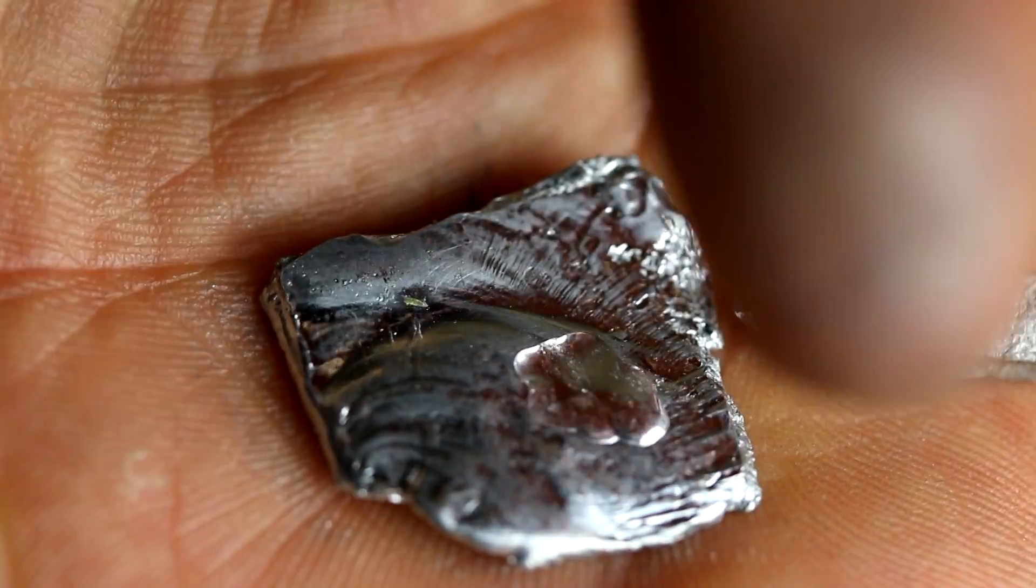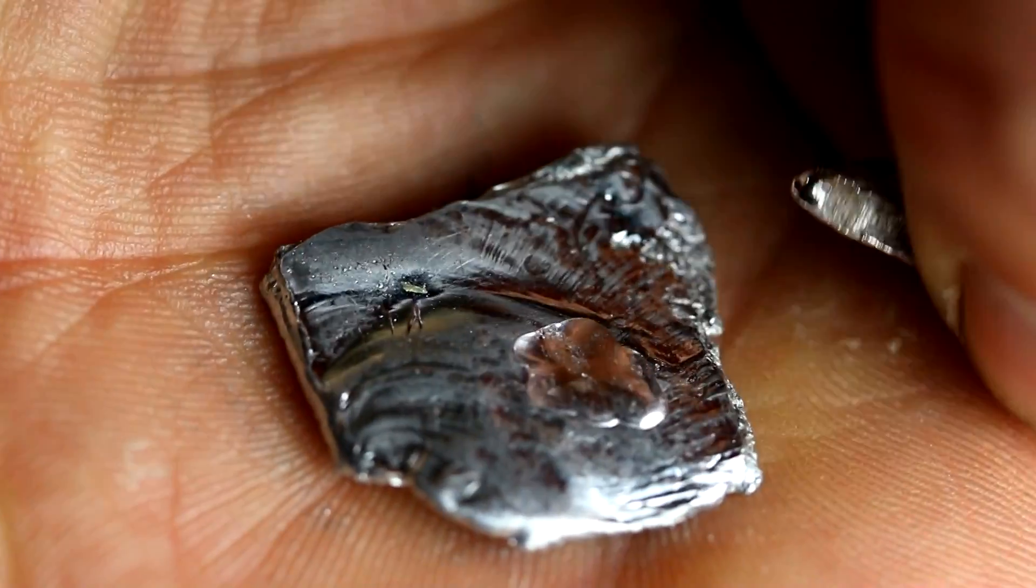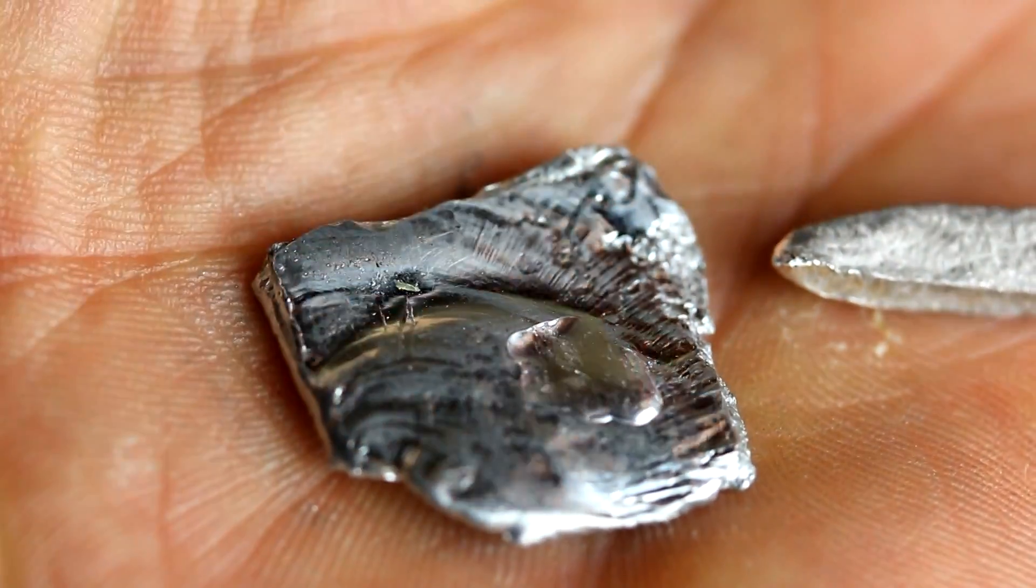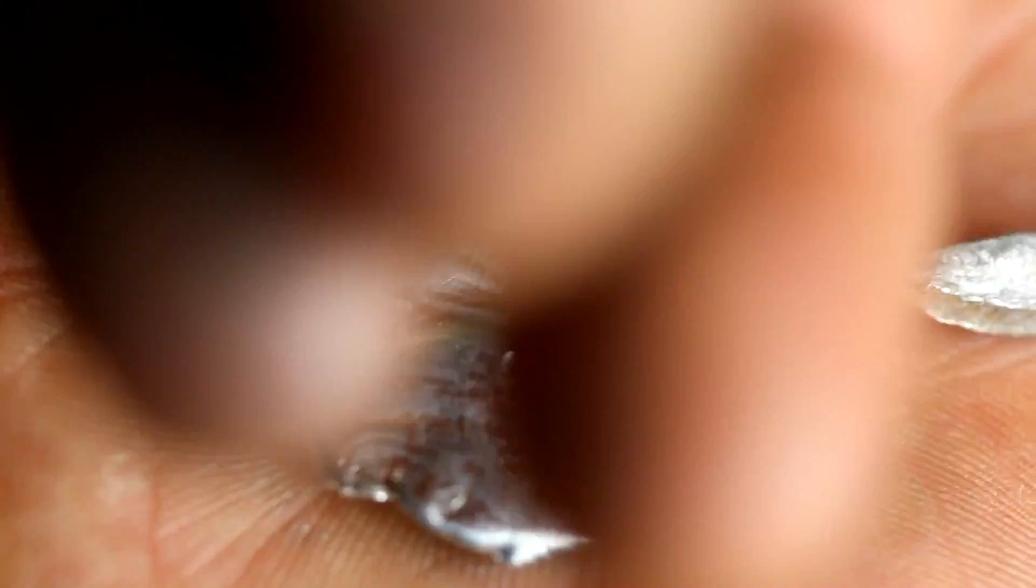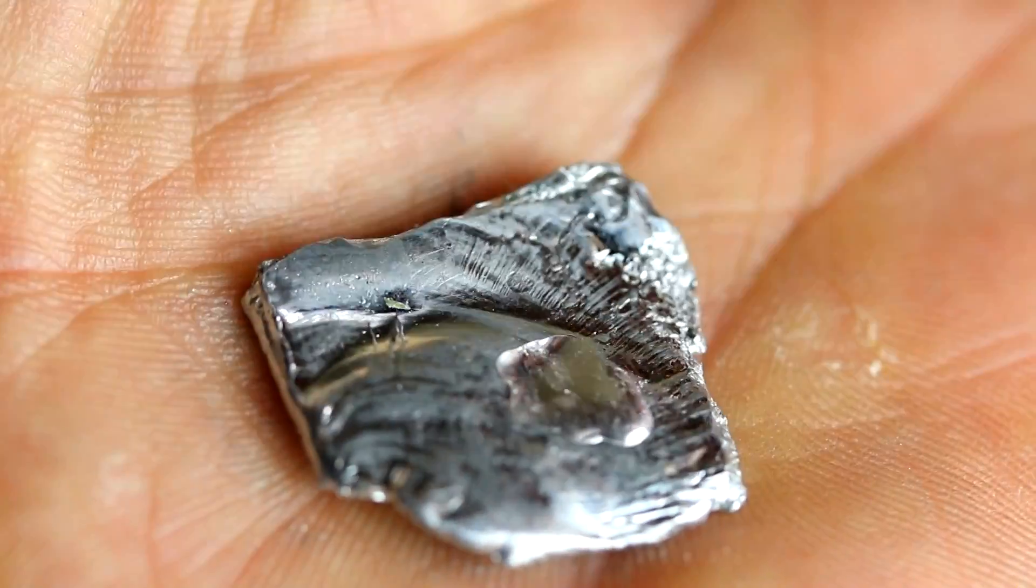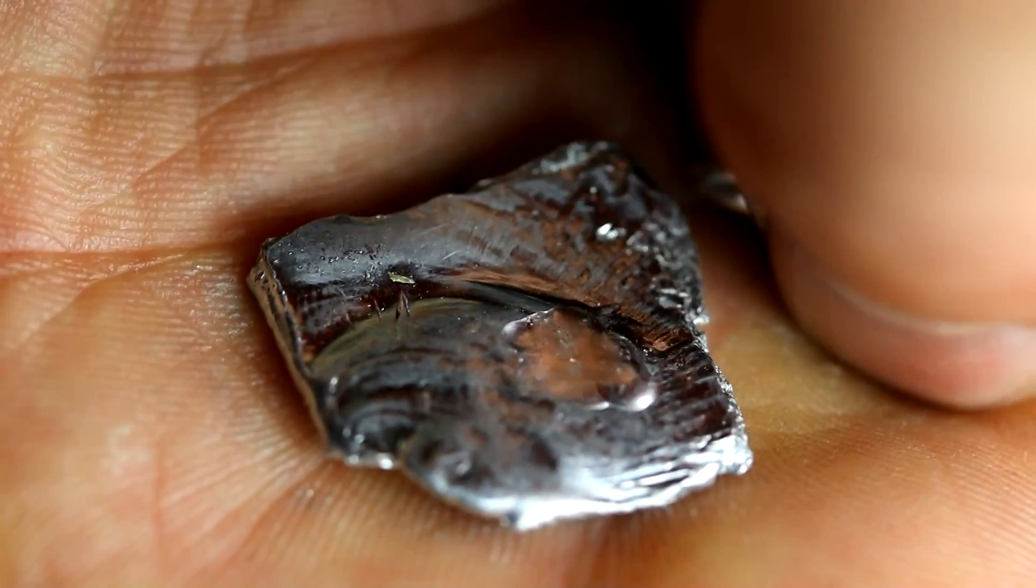Basically the second metal gets in the way of the crystal formation of the first metal and that causes the randomness to be a little bit more and so it's liquid down to a lower temperature.